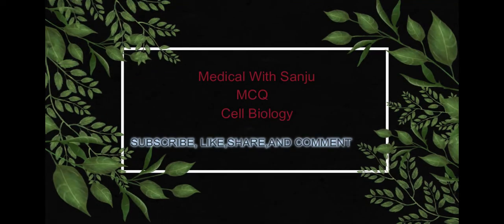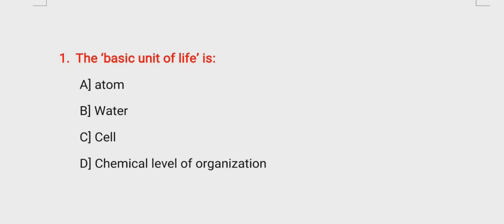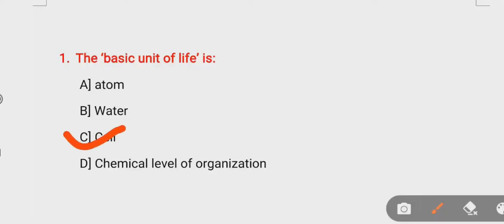Question number one: the basic unit of life is — option A: Atom, option B: Water, option C: Cell, option D: Chemical Level of Organization. The right answer is option C, Cell. Cell is called the basic unit of life, structural unit of body, functional unit of body, and physical basis of life.